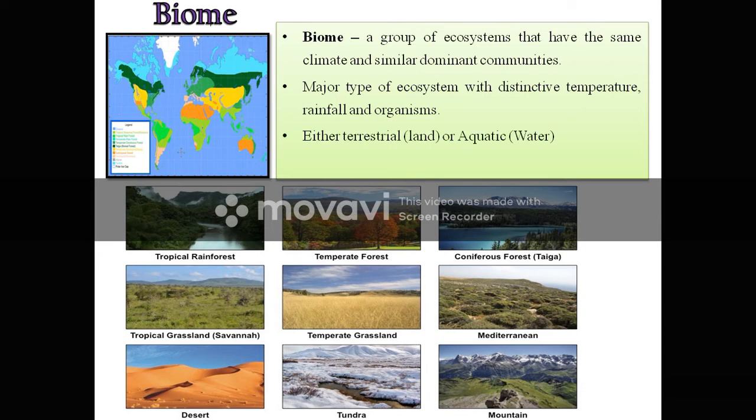A biome can either be terrestrial — situated on land — or aquatic, in water. We can remember that many ecosystems can be present within one biome; one biome can include many ecosystems.